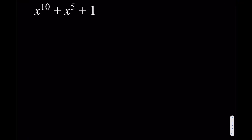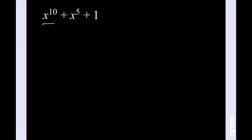So I start with x to the 10th power, and then I subtract x to the 7th power, then add x to the 7th power, then subtract x to the 4th power. And then I add x to the 5th power, which is already in our expression. We subtracted and added x to the 7th — those cancel — and we added x to the 5th. But we subtracted an extra x to the 4th, so we need to add that back.